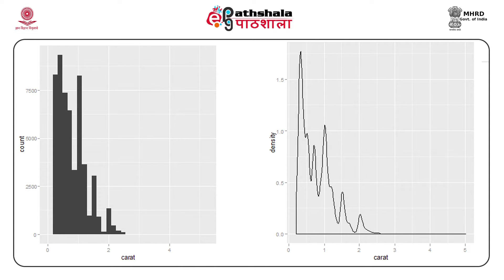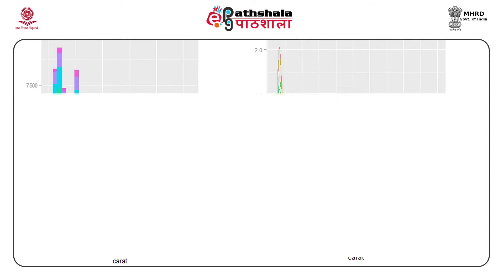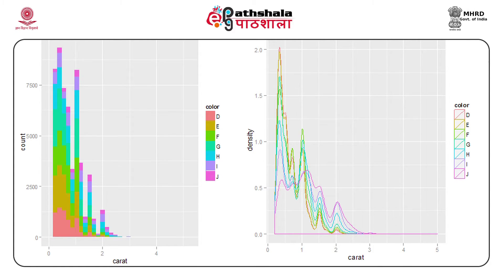You can always change the bandwidth with the bandwidth argument. If you want to make it more colorful, you can always use the fill or color argument as we have seen previously, and hence obtain colorful plots. Indeed, they are visually more appealing than the previous ones we have come across.